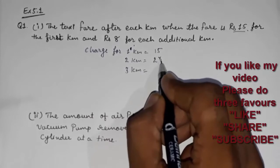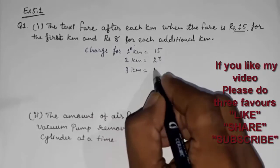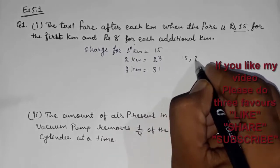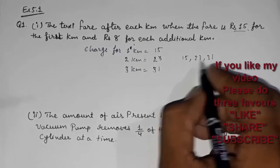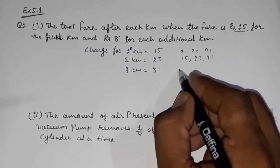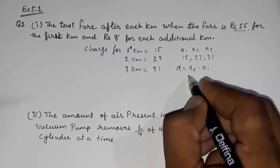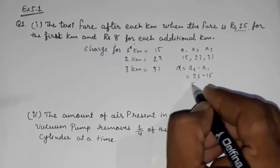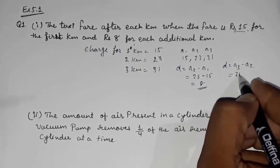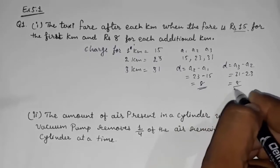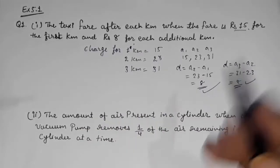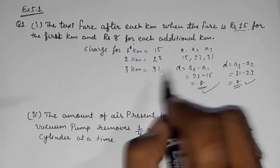Charge for three kilometers: 15 plus 8 plus 8, so 23 plus 8 equals 31. We are getting the sequence 15, 23, 31. To check if it is an AP: d = a2 − a1 = 23 − 15 = 8, and d = a3 − a2 = 31 − 23 = 8. Since the common difference is the same, this is an AP.